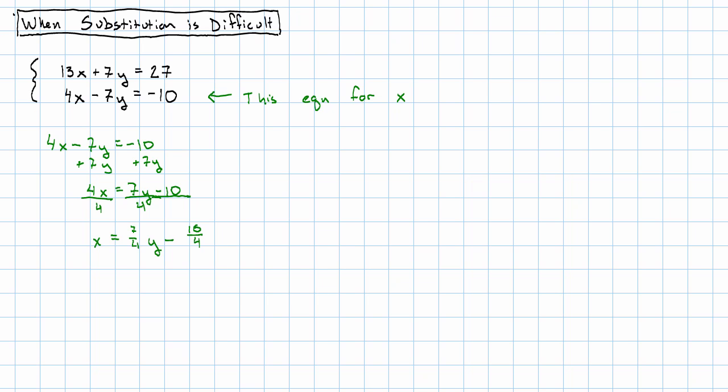And now we can substitute in this equation. So we'll have 13x plus 7y is 27. Take away the x, and put in this expression that's equal to x instead.